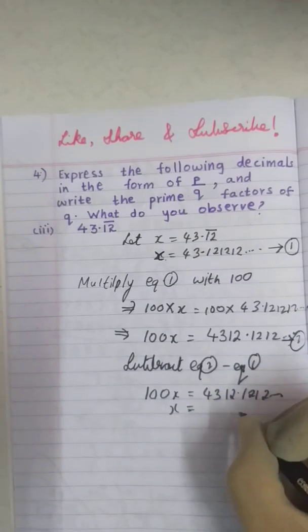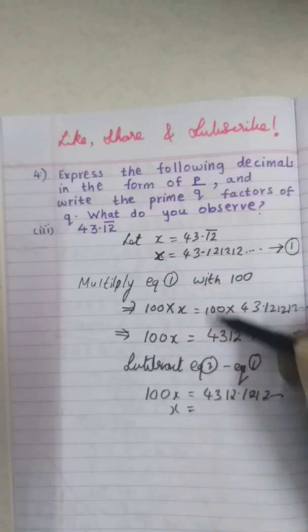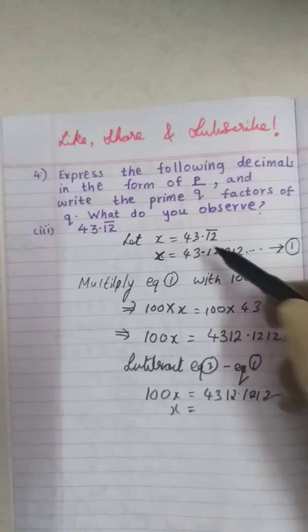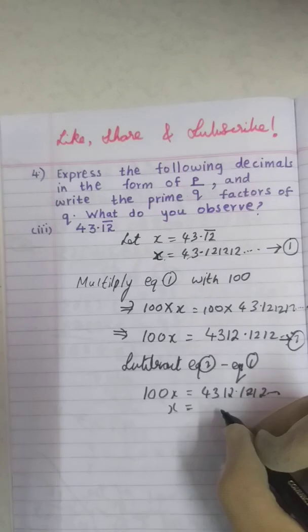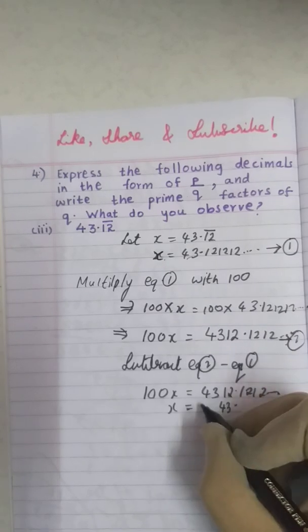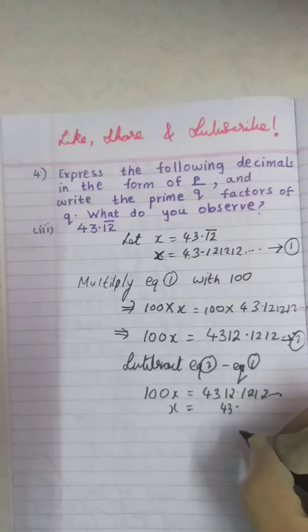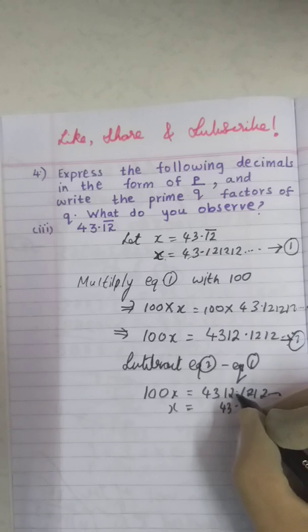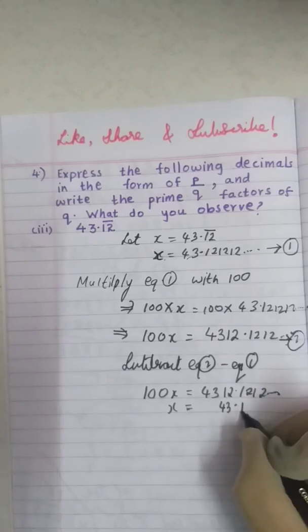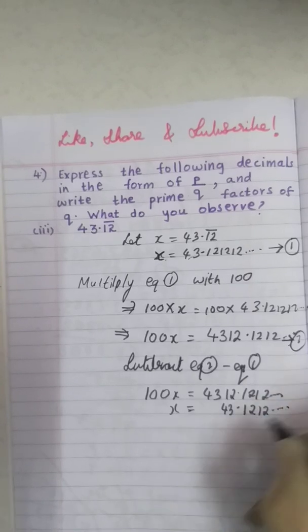The first equation is x equals to, remember here the students often do mistakes, that is below the decimal point you should have point. So where should I write this 43.1212? Always remember you have to put point below point. So this becomes 43.1212 and so on.